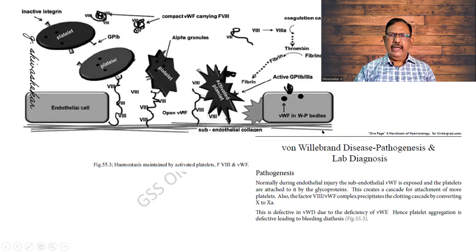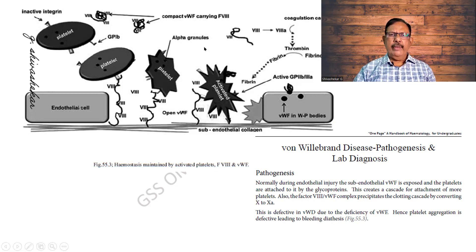This is a very important diagram — you should be able to draw this one. The endothelial cell is shown, and the platelet is very bland initially, then becomes activated. Factor 8 is also essential. Once the coagulation cascade activates Factor 8, thrombin is formed, converting fibrinogen to fibrin. In that meshwork of fibrin, RBCs and platelets are incorporated. Von Willebrand's factor is found in the Weibel-Palade bodies of the endothelial cells.